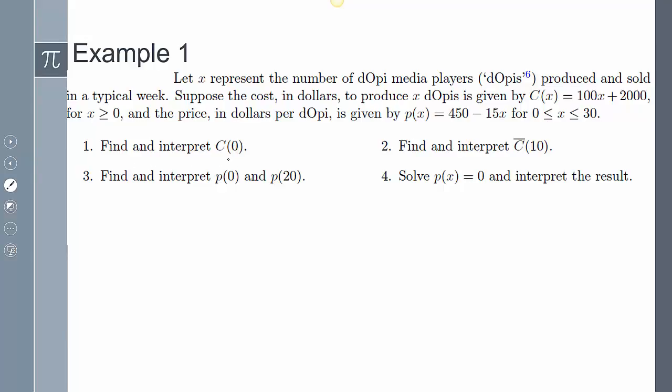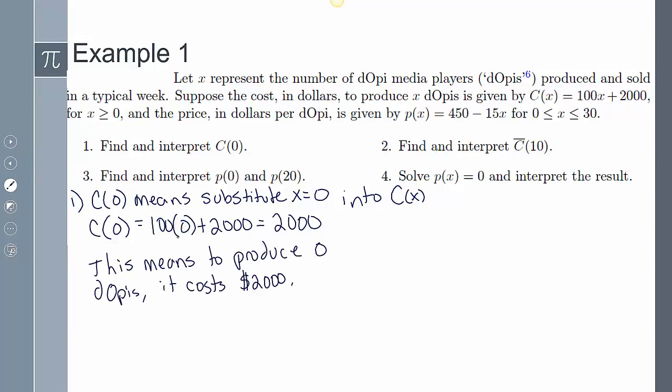It says find and interpret C(0), which means the cost when I produce nothing. So x is zero and I plug zero into my function. And so that means the cost to produce zero DOPs costs $2000. Another way to look at it, this is my startup costs.